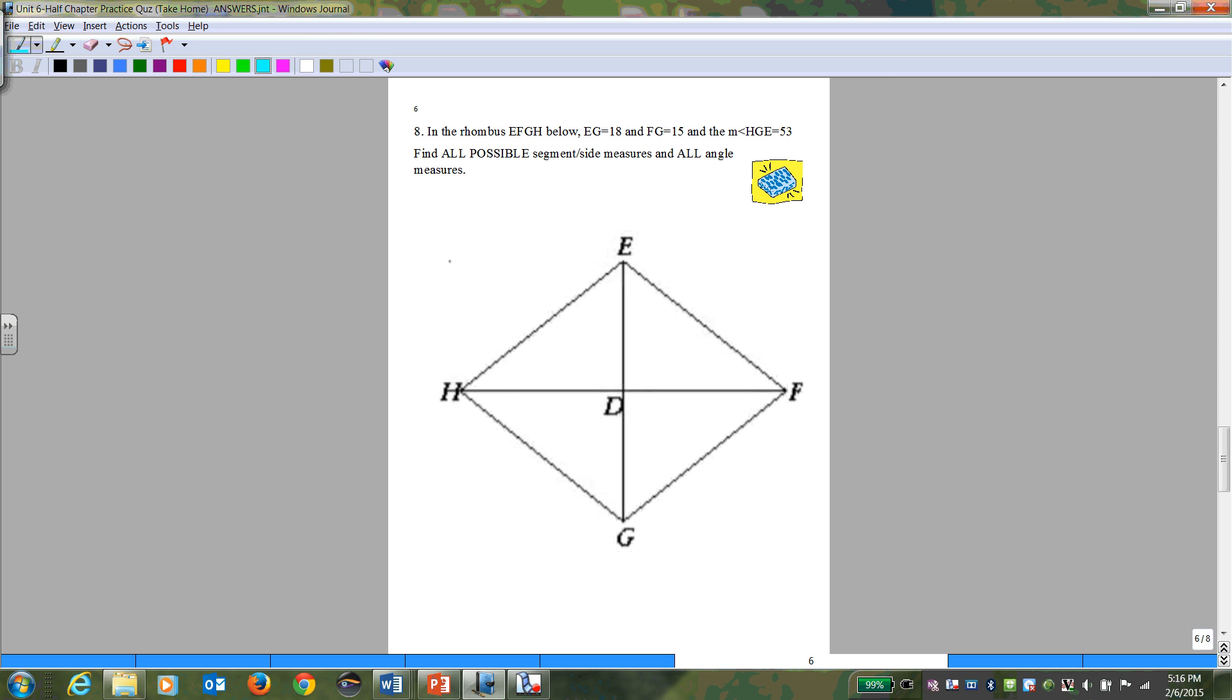So it says rhombus: in rhombus EFGH below, EG is 18, FG is 15, and the measure of HGE is 53. So get in the habit of writing everything you know about a rhombus. Take it from your quad family tree. Just get in the habit of listing everything. Put it on the diagram and then work yourself from there.